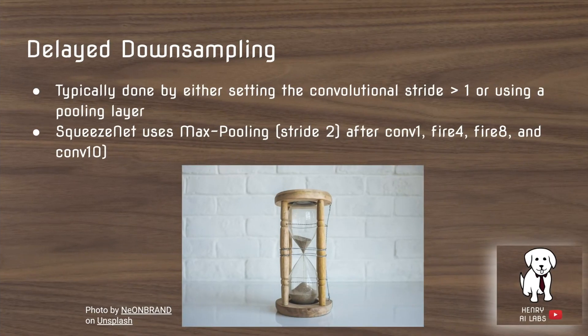Delayed downsampling is achieved with max pooling placed after the first convolution, the 4th and 8th Fire modules, and then the 10th convolution. This will be clear when viewing the full architecture diagram.